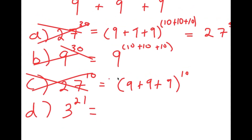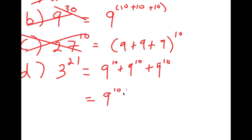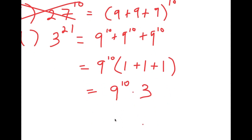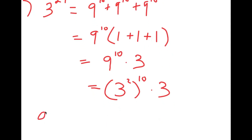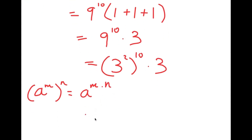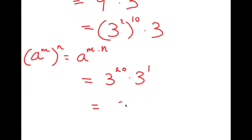By process of elimination, D) 3 to the power of 21 is correct. Starting with 9 to the 10th plus 9 to the 10th plus 9 to the 10th, I factor out 9 to the 10th to get 9 to the 10th times 1 plus 1 plus 1, which equals 9 to the 10th times 3. Since 9 equals 3 squared, this becomes 3 squared to the 10th times 3 to the 1st, which equals 3 to the 20th times 3 to the 1st. Adding exponents gives 3 to the power of 21.